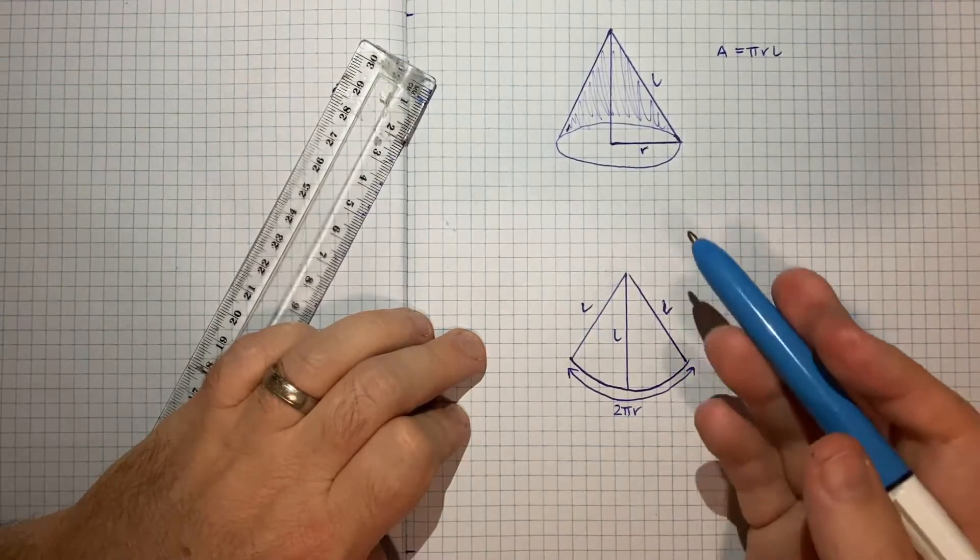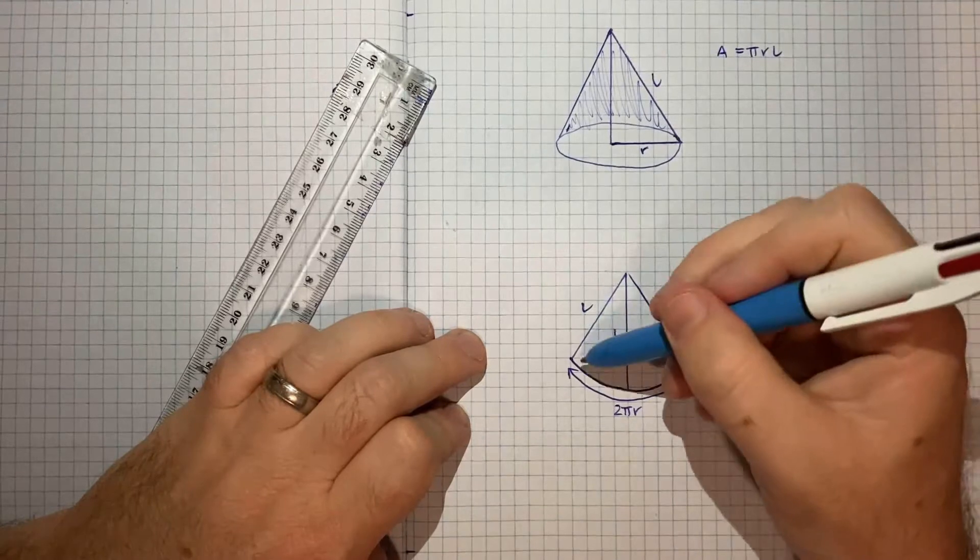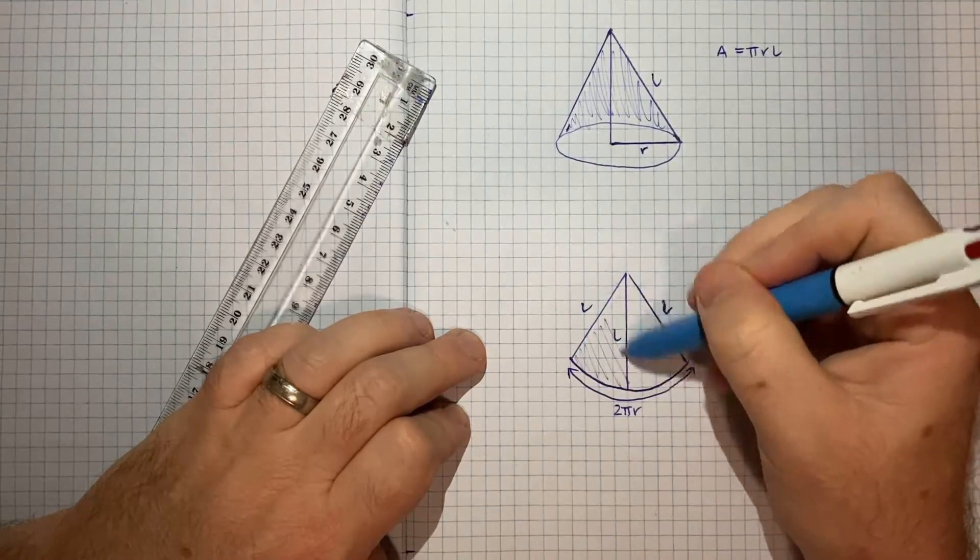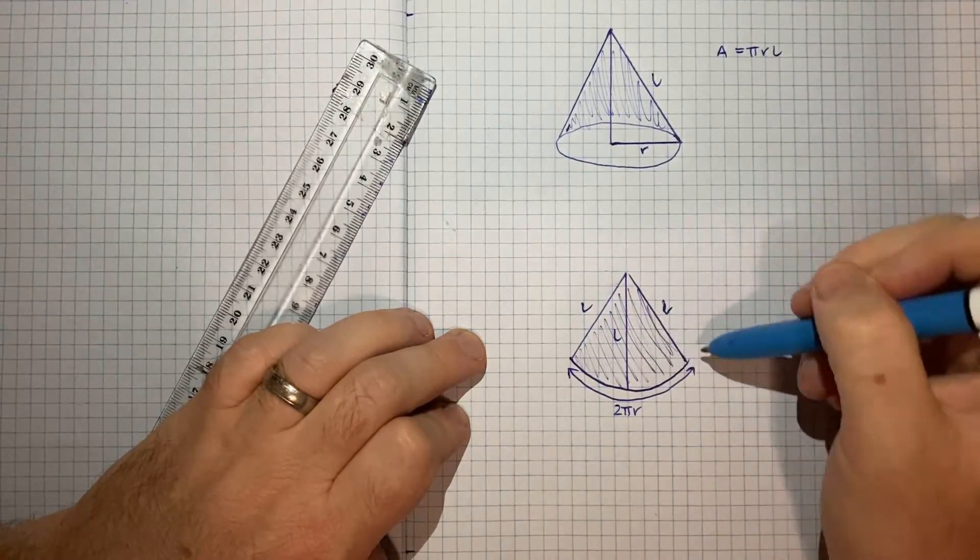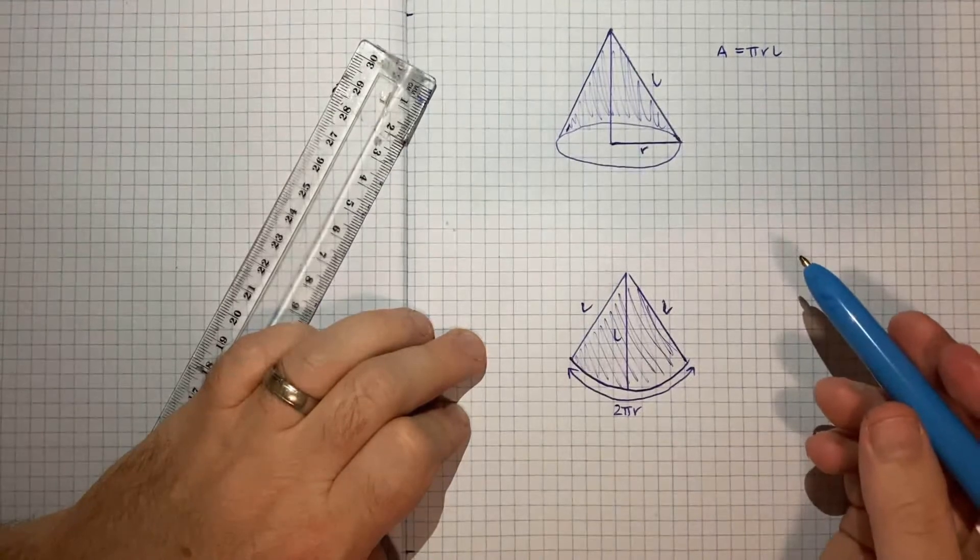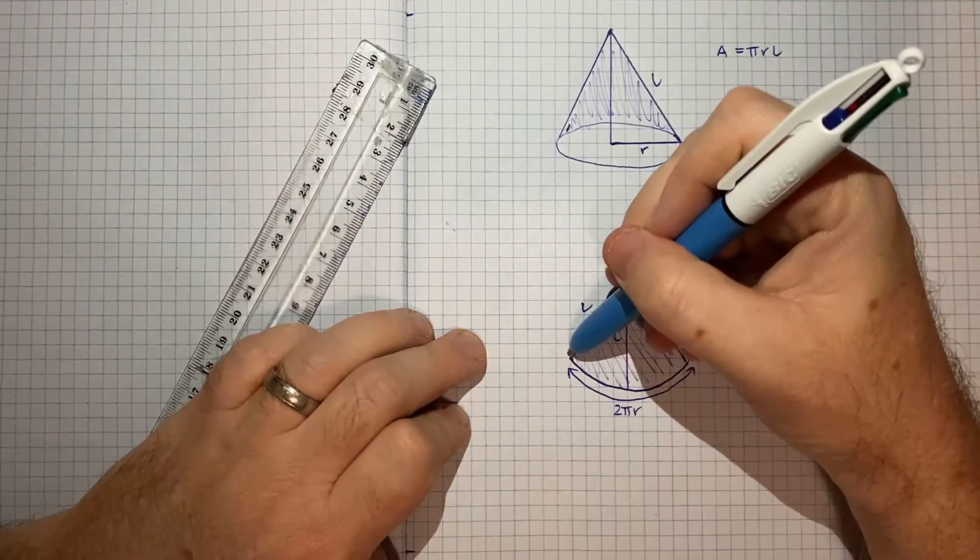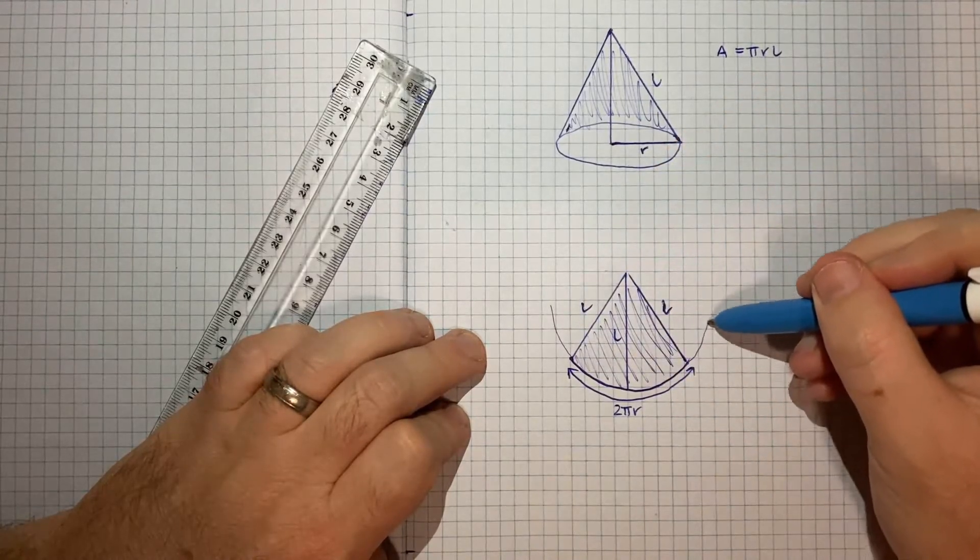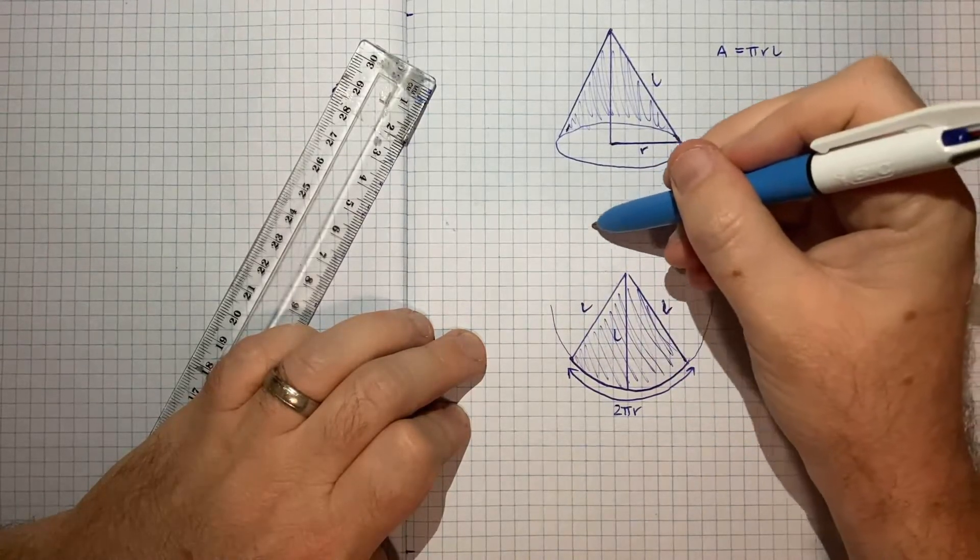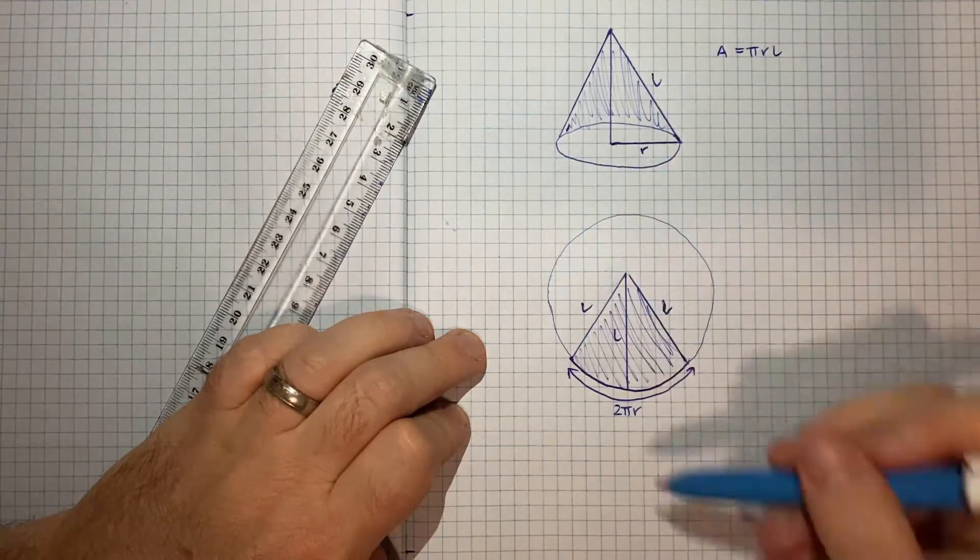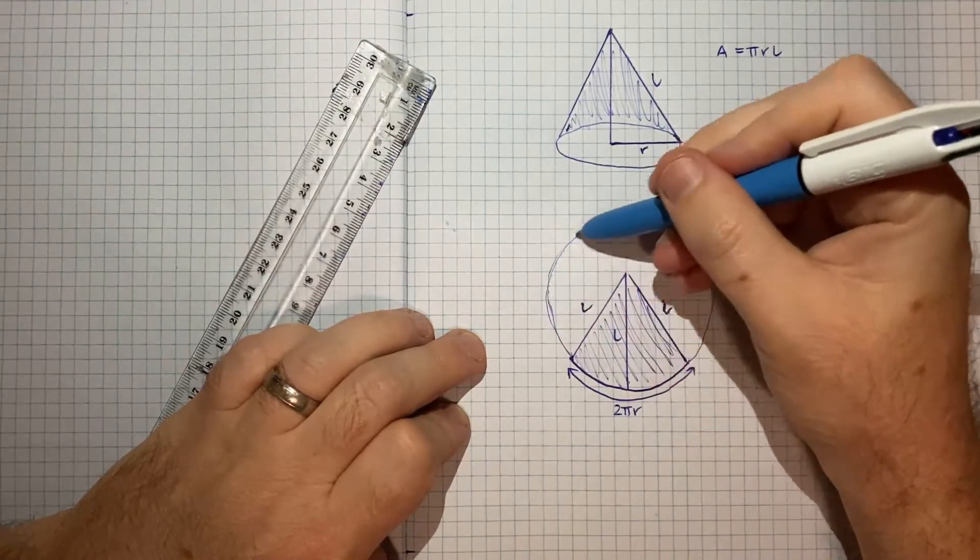So now essentially the area of the surface area of this cone, if we can find the area of this arc then we found the area of the cone. Now if we think of this arc as sitting as part of a wider circle, here's my attempt at drawing a circle, that's the best I can do freehand.